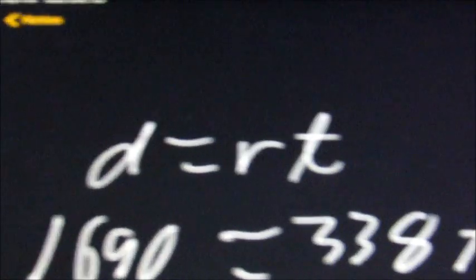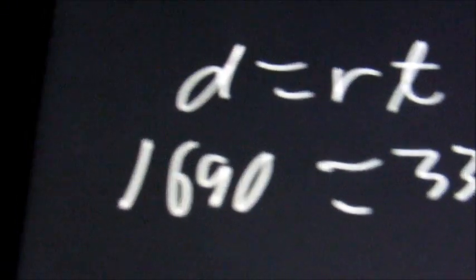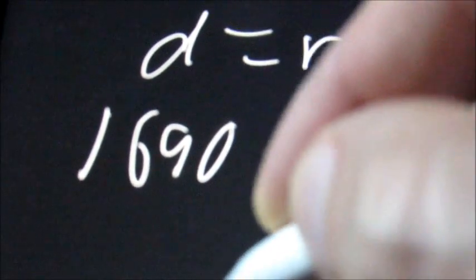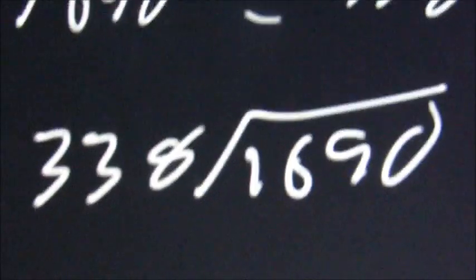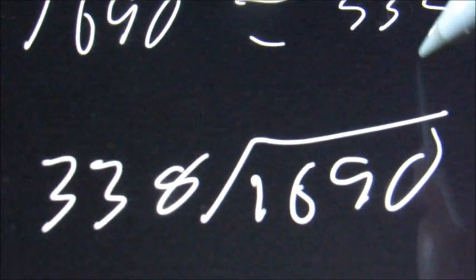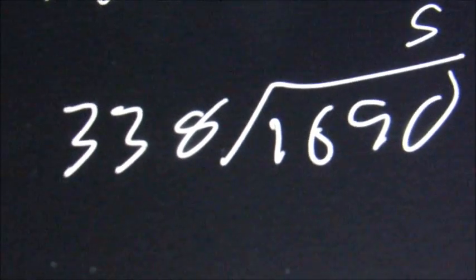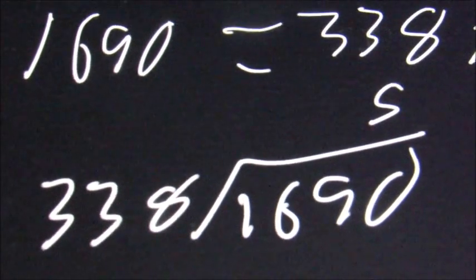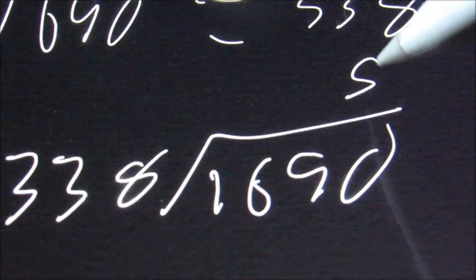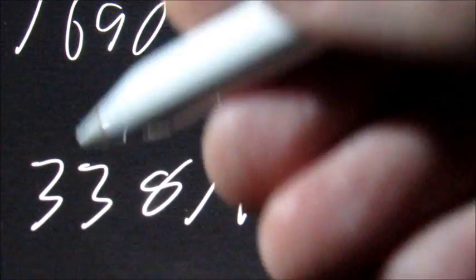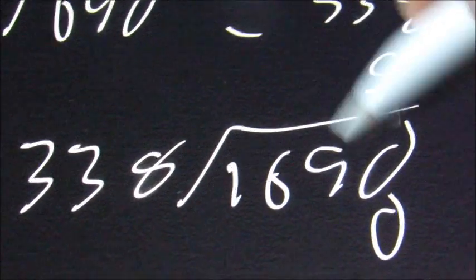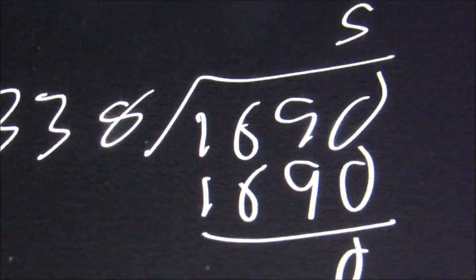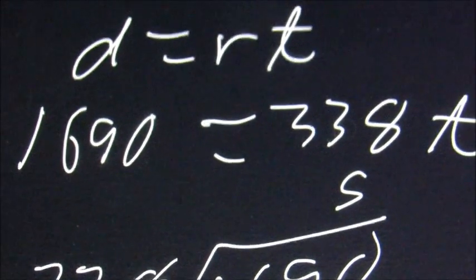So what we're going to do is solve this by dividing 338 into 1690. This is going to go, I'm going to guess, 5 times. One way that I do this is look at the first number and the first part here. 3 will go into 16 about 5 times. So 5 times 8 is 40, 5 times 3 is 15 plus 4 is 19, 5 times 3 is 15 plus 1 is 16, and 0 remainder. So the answer here is going to be 5 hours.